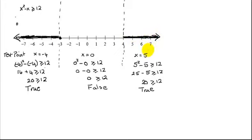So I've nearly finished my graph. All I have to do now is come up here, look at my inequality. It's greater than or equal to. So I need to put square brackets on my two endpoints. And now I'm ready to write the answer in interval notation.